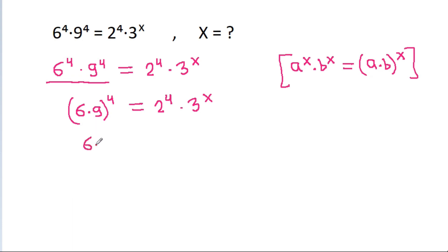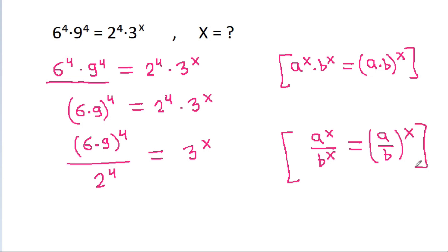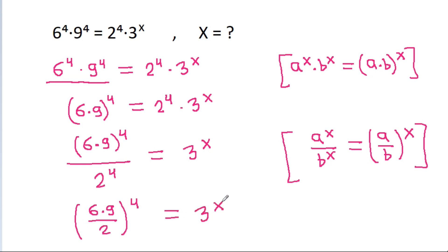So (6 times 9) power 4 divided by 2 power 4 is equal to 3 power x. And since a power x divided by b power x is equal to (a divided by b) power x, this becomes (6 times 9 divided by 2) power 4, that is equal to 3 power x.